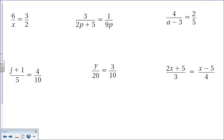So typically what we're doing is we're solving the missing variable. I mean, that's not too difficult to think about. So let's take a look here at the one on the top left: 6 over x equals 3 over 2.